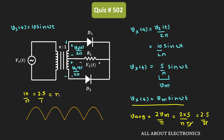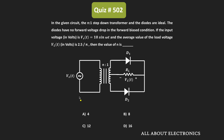So if we compare, the π cancels out, and we have 10/n = 2.5, giving us n = 4. So for this center-tapped full wave rectifier, the turns ratio of this transformer is equal to 4:1, or the value of n is equal to 4. Therefore, for the given question, option A is the correct answer. Thank you.